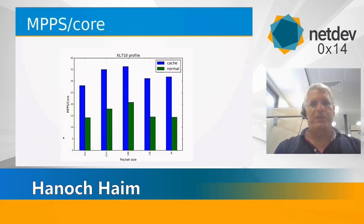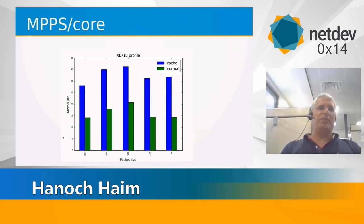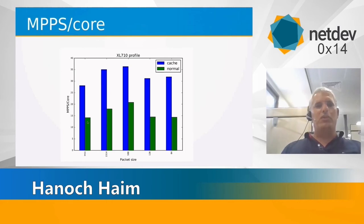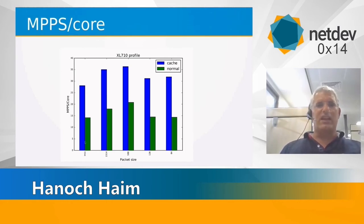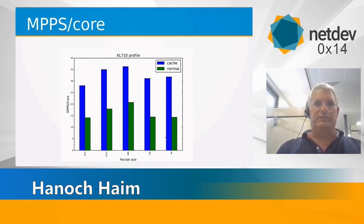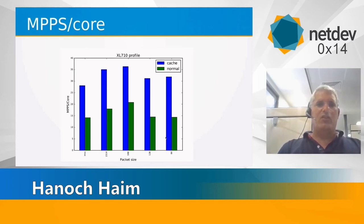Looking at performance: this is mega packets per second per one core. It depends on the mode — it's between 10 to 25 mega packets per second, and packet size is less of a factor. So if you want performance and your feature is not that complicated, this is the way to go.